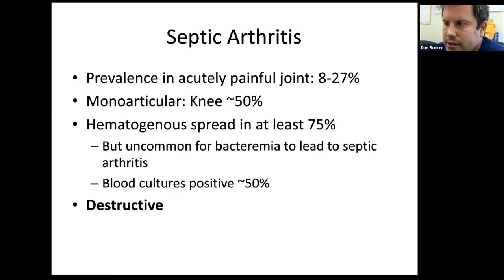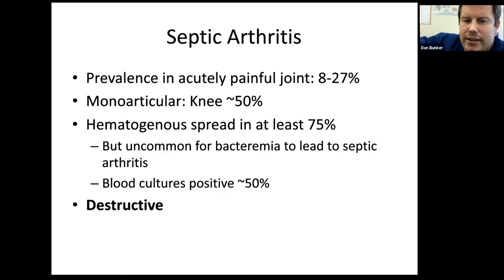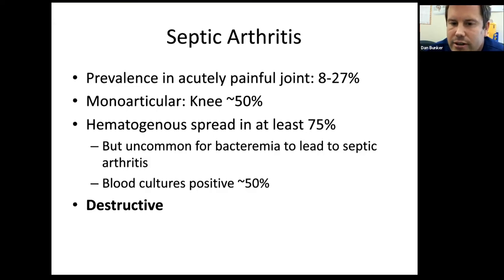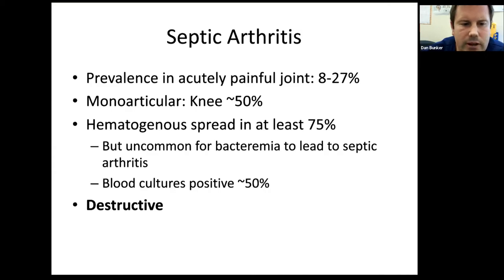Septic arthritis is a destructive arthritis. Every specialty has its 'time is X' phrase — neurology has 'time is brain,' urology has 'time is testicle' for acute torsion. For septic arthritis, it's 'time is joint.' Because it's destructive, people can have essentially complete loss of the joint from something like staph within 48 to 72 hours. Outcomes are much better the quicker antibiotics are administered and the joint is intervened upon. This is a can't-miss diagnosis — even delay of treatment by hours can be catastrophic for the patient in the long term.